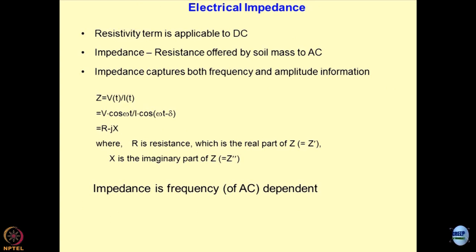When we measure the resistance by using DC current, we call it resistance. However, when we measure the resistance by using AC current, this becomes impedance. We can define impedance Z as V(t) / I(t), which is V·cos(ωt) / I·cos(ωt − δ). This is the lag between the voltage and the current. We can define this term as r − jx in the complex form.